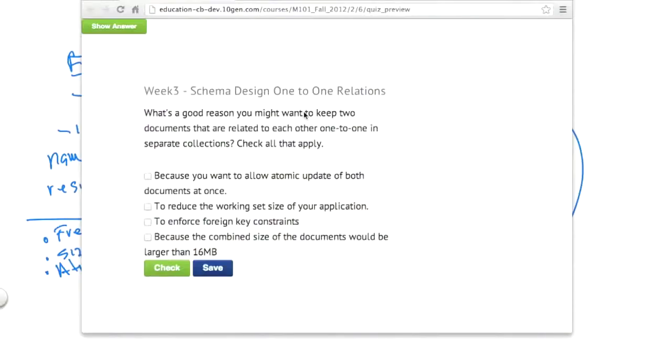All right, it's time for a quiz. What's a good reason you might want to keep two documents that are related to each other in a one-to-one relationship in separate collections? Check all that apply: because you want to allow atomic update of both documents at once, to reduce the working set size of your application, to enforce foreign key constraints, because the combined size of the documents would be larger than 16 megabytes.